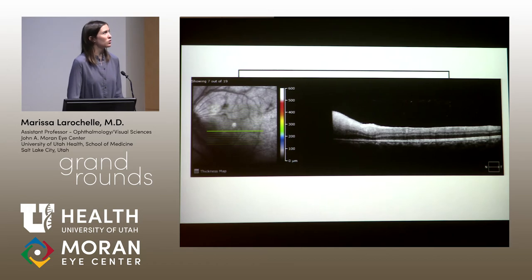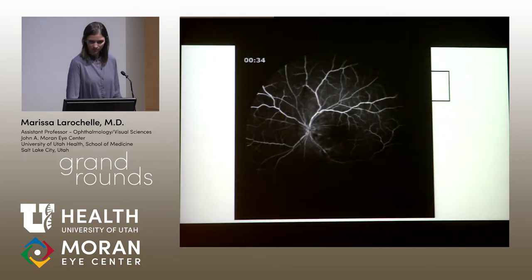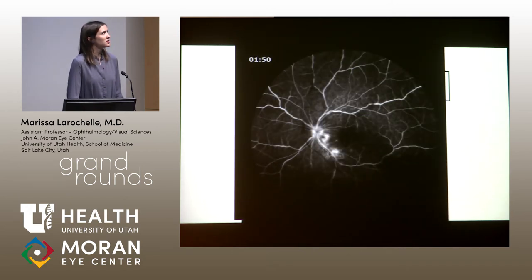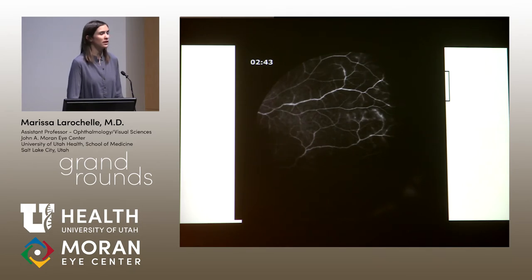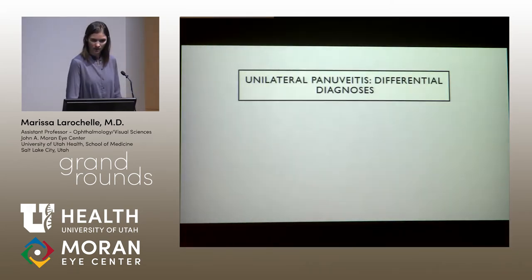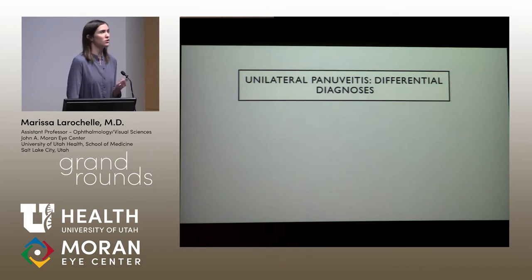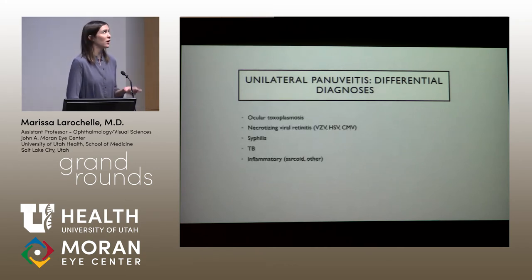OCT showed a hyperreflective infiltrate of the retina on the nasal side. Fluorescein angiography demonstrated early blockage in the area of retinal hemorrhage, later hyperfluorescence or leakage in the area of retinitis, retinovascular leakage, and also some retinovascular leakage in the peripheral retina distant to the activity. This patient has anterior chamber reaction, vitreous inflammation, and a chorioretinal lesion — a pan-uveitis. For a unilateral pan-uveitis, the top of the differential is infection: ocular toxoplasmosis, viral retinitis, syphilis, TB, and lower on the list an inflammatory pan-uveitis.